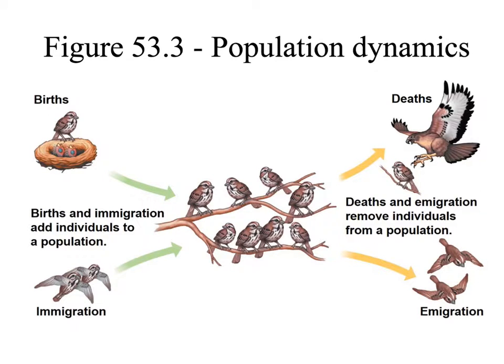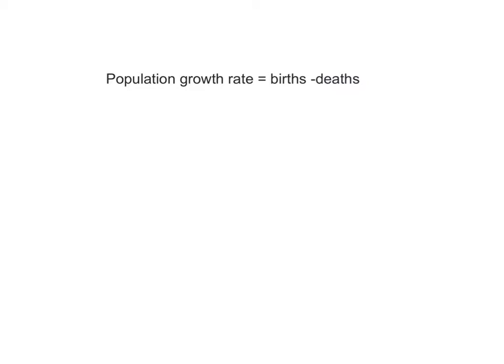Here's an example of a population of sparrows. Each year, there are a certain number of babies born into our population, and some birds immigrate into it. On the flip side, some sparrows die each year due to natural causes, predation, or other problems, and some birds emigrate out. All of these factors contribute to the overall population size and the population growth rate. The population growth rate equals the number of births minus the number of deaths per year. Generally, immigration and emigration are assumed to cancel each other out, so the overall change from those is zero.